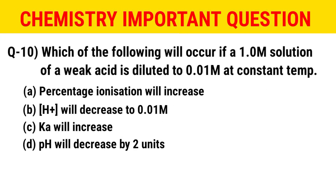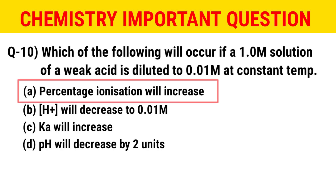The last question, question number 10: which of the following will occur if a 1 mol solution of a weak acid is diluted to 0.01 mol at constant temperature? The options are: percentage ionization will increase; H⁺ will decrease to 0.01 mol; Ka will increase; or pH will decrease by 2 units. The correct option is A — percentage ionization will increase.